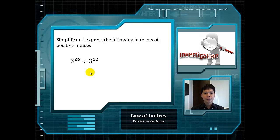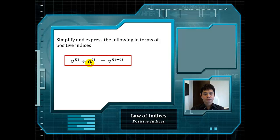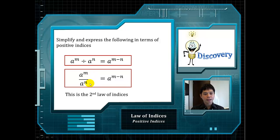By subtracting the powers, we will have 3 to the power of 16. Therefore, in general, a to the power of m divided by a to the power of n — do take note that we have the same base again — and we can simplify it into a to the power of m minus n. This is our second law of indices, and it is just another way of writing a to the power of m divided by a to the power of n. We can simply subtract the powers.